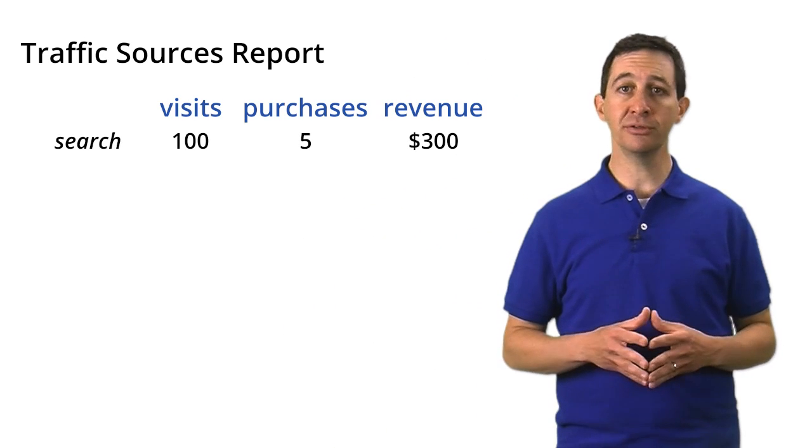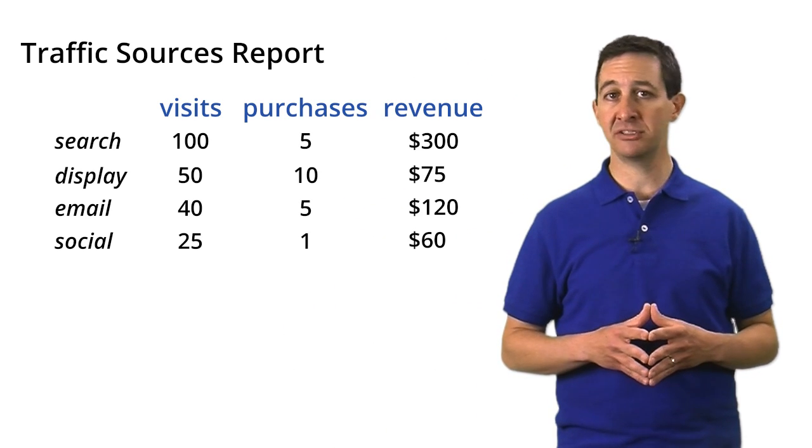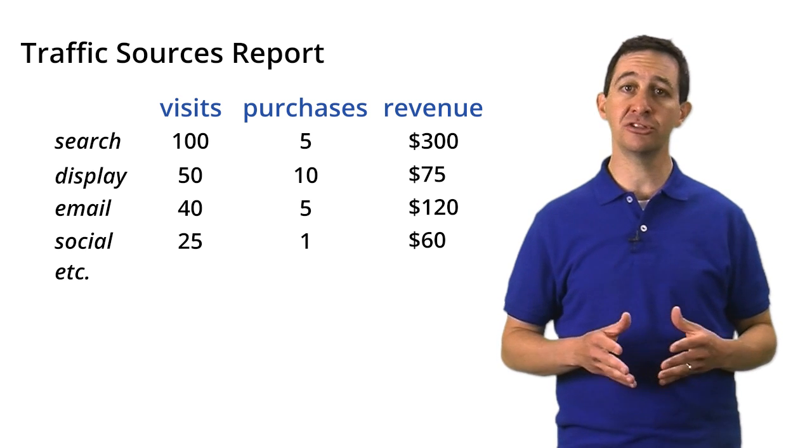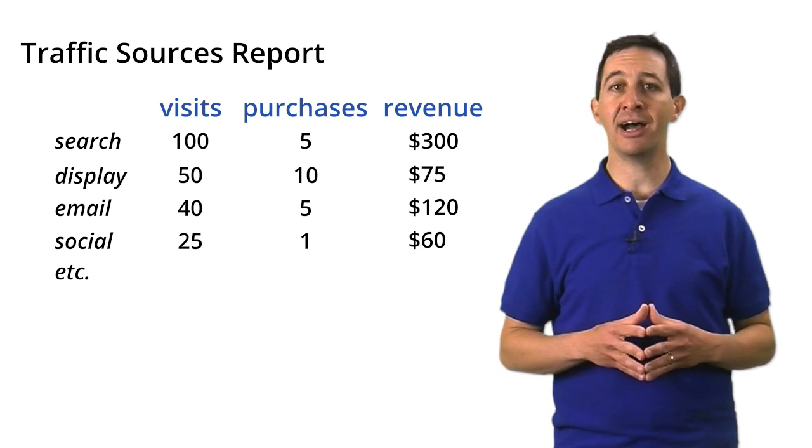All reports in Google Analytics provide segmentation of your traffic. For example, take a look at your traffic sources report. Each row on the table shows how a specific traffic segment performed. This lets you compare different segments and understand which sources are bringing in the highest value traffic.